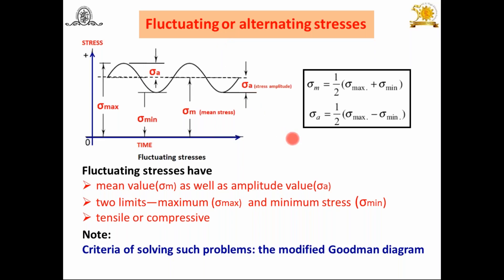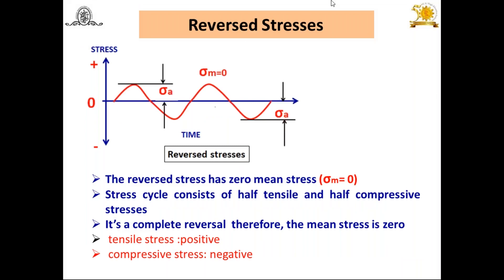When components are subjected to fluctuating and alternating stresses, they are solved using the modified Goodman diagram. While designing such a component, you have to check whether the component is subjected to fluctuating or alternating stress, and the criteria for solving such problems is the modified Goodman diagram. This topic — how to design components subjected to fluctuating or alternating stresses — will be discussed in a future session.